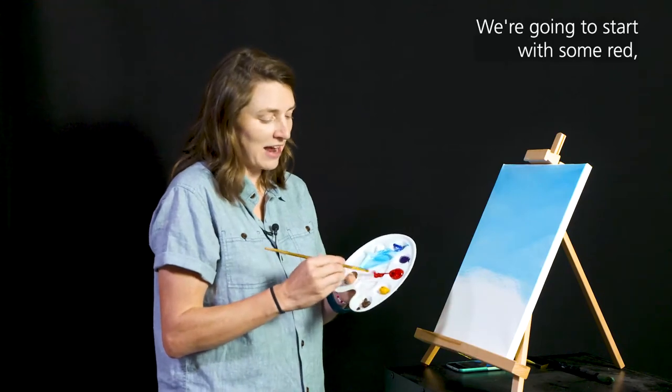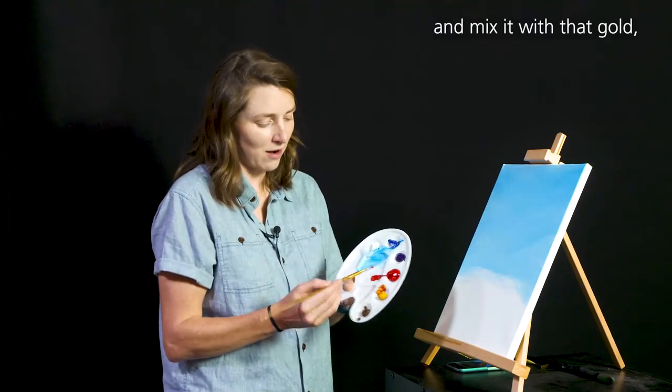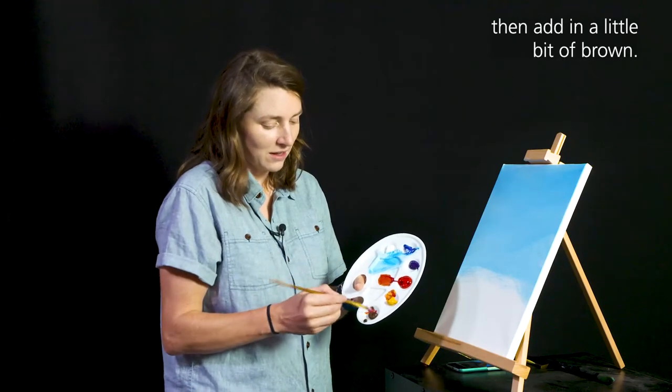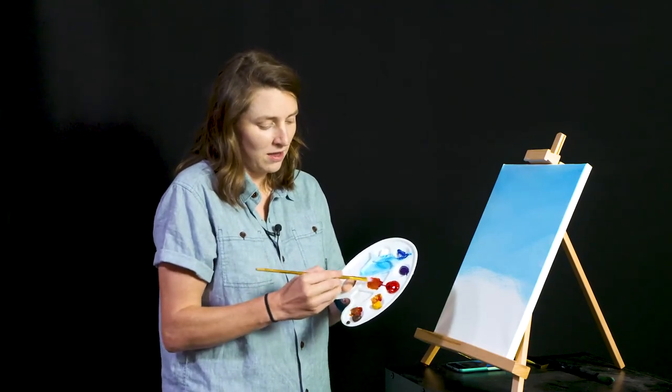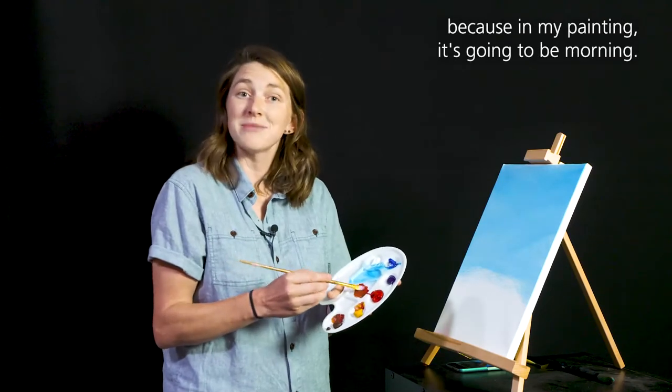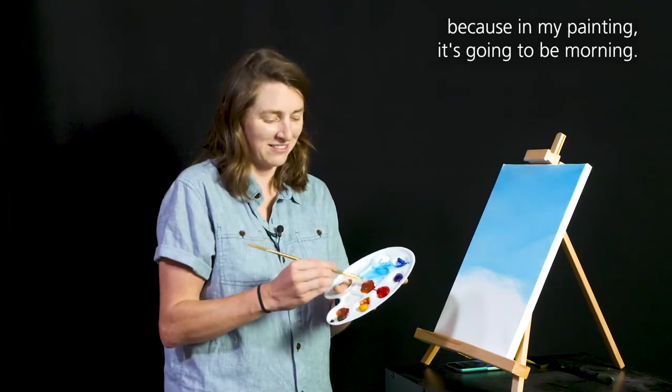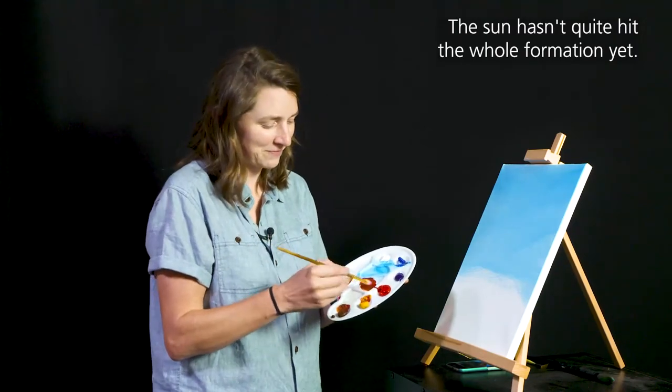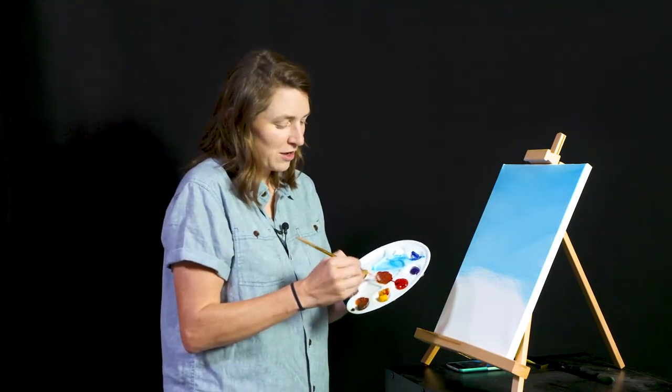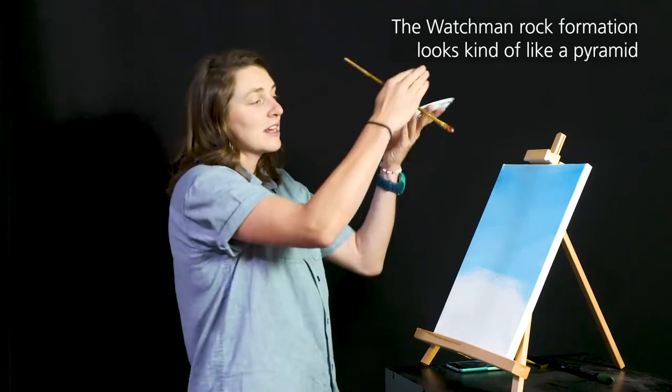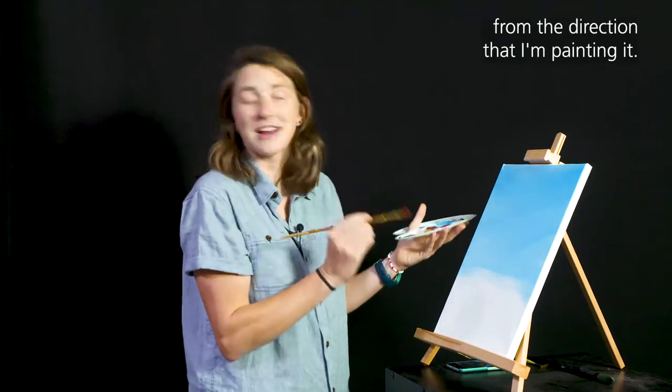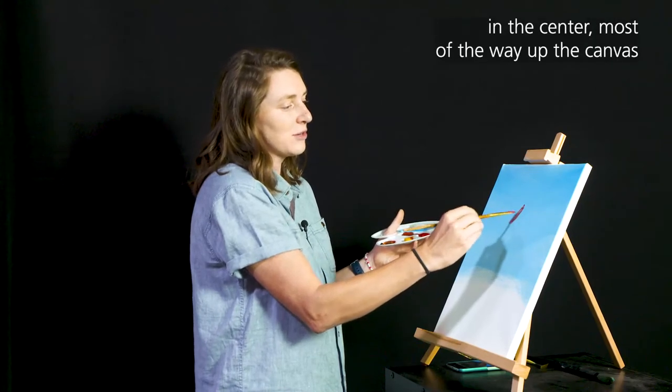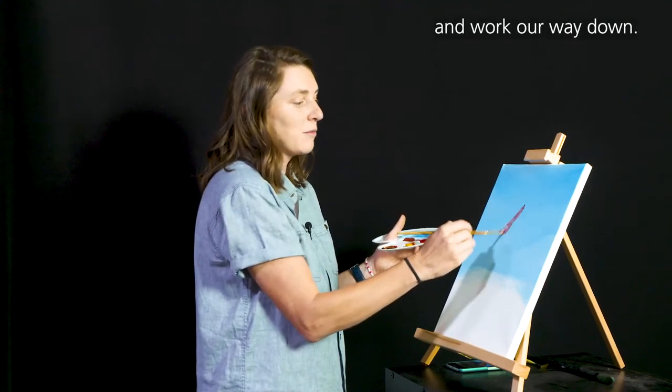I'm going to start with some red and mix it with that gold and add in a little bit of brown. I'll be working on the darker side of the Watchman because in my painting it's going to be morning and the sun hasn't quite hit the whole formation yet. The Watchman rock formation looks kind of like a pyramid from the direction that I'm painting it, so I'm going to start with its tall point in the center most of the way up the canvas and work our way down.